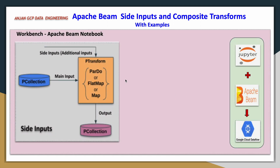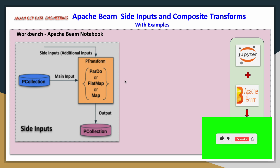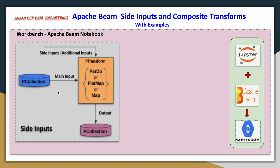In the first case we will see side inputs. For any Apache Beam pipeline, the main input is a P collection. We perform certain transformations on top of a P collection — it can be a ParDo, flat map, map, or any other core P transform. If you need to write your own user-defined logic you will typically use ParDo. If there is a requirement to take some additional input while performing a P transformation, those are runtime inputs. That P transform will then emit one more P collection.